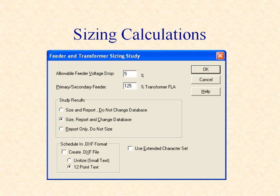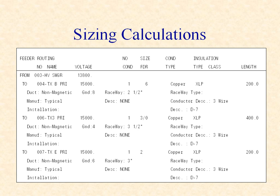The cable and transformer size report can also be saved in a schedule format suitable for inclusion on CAD drawings. The DAPR sizing report lists the feeders into and out of each bus and includes the number of conductors, size of the phase and ground conductors, raceway size, duck bank or installation description, insulation type and class, cable description, and length of run.